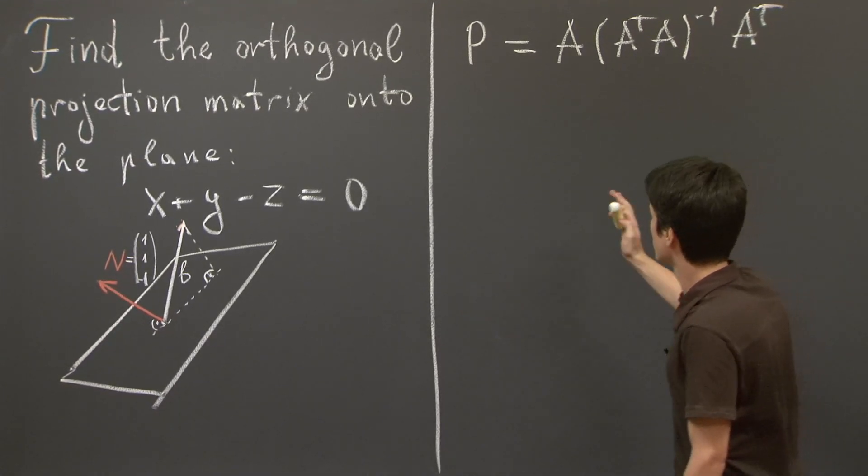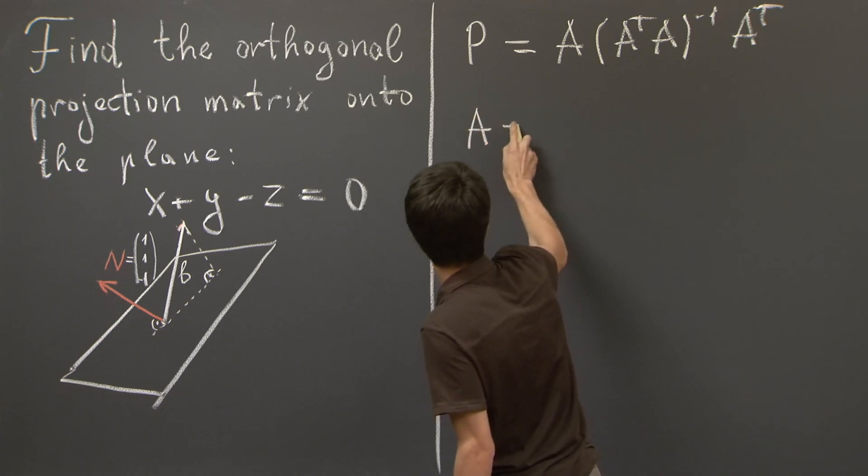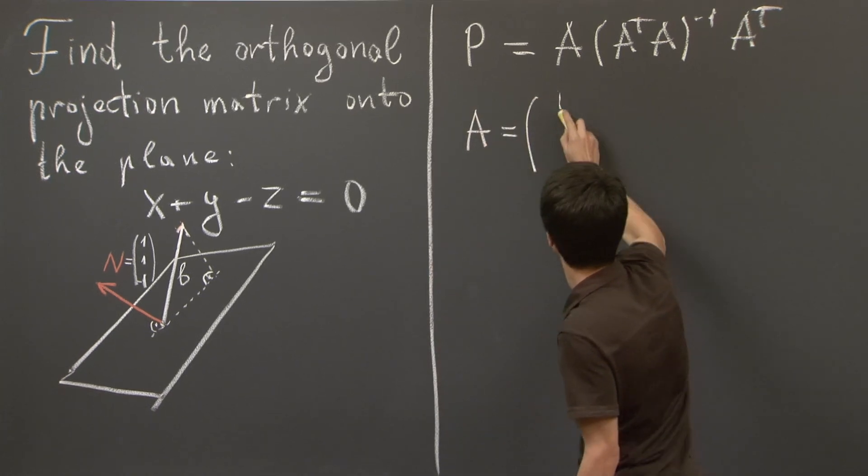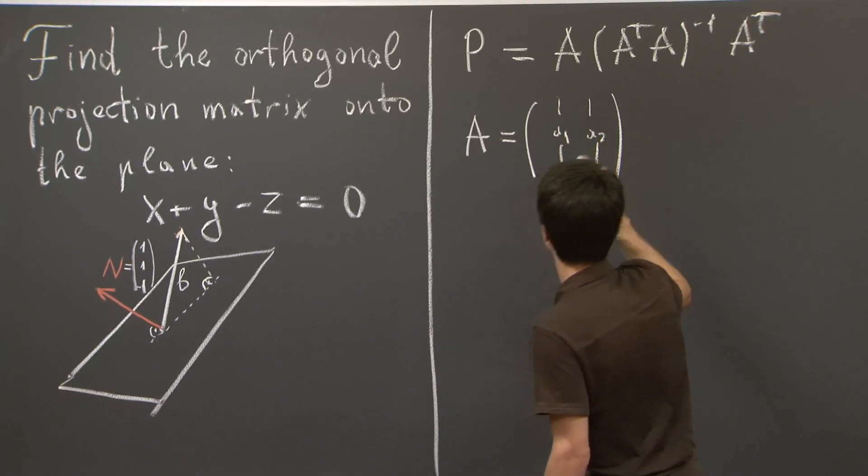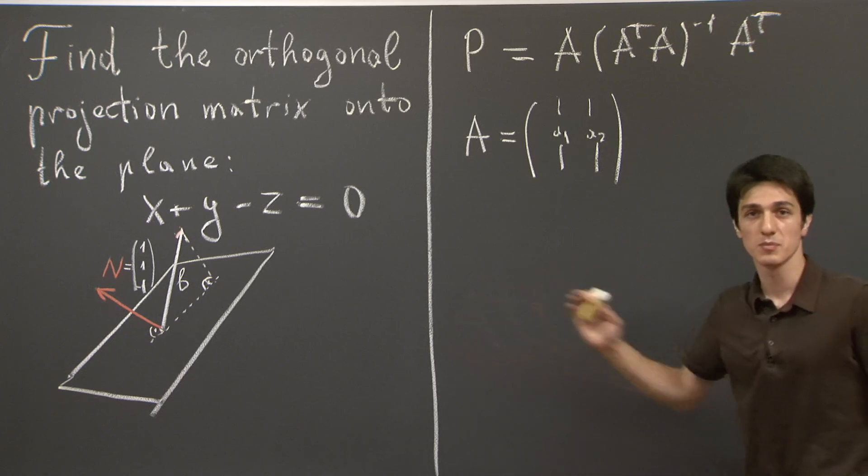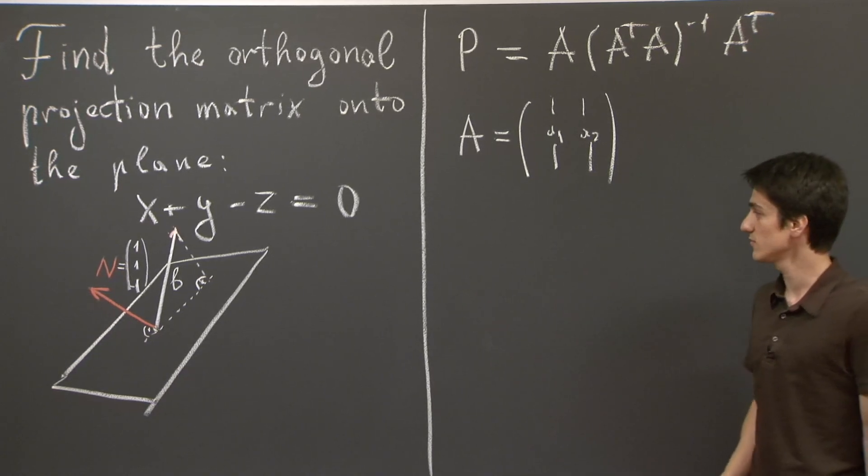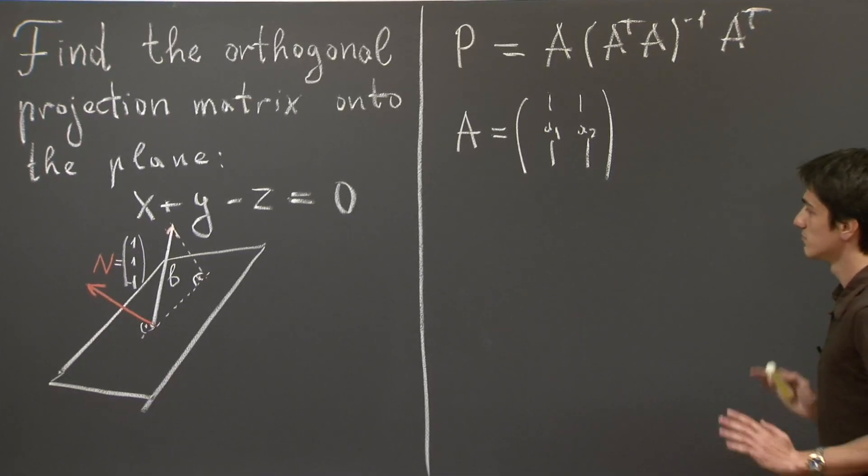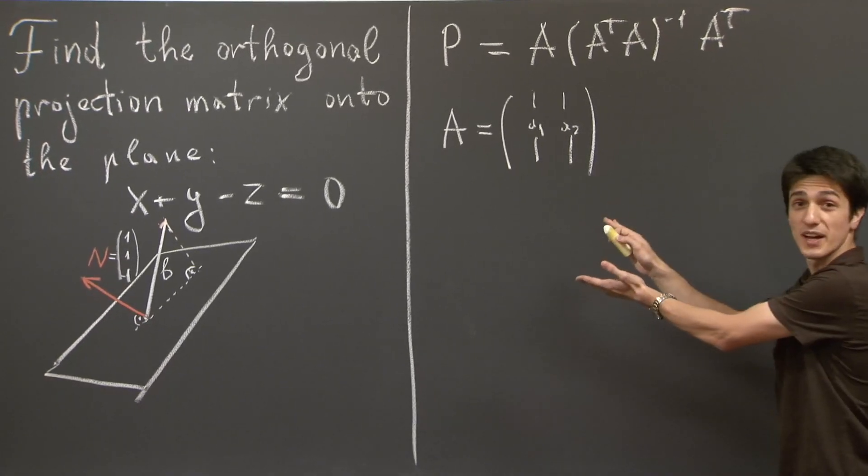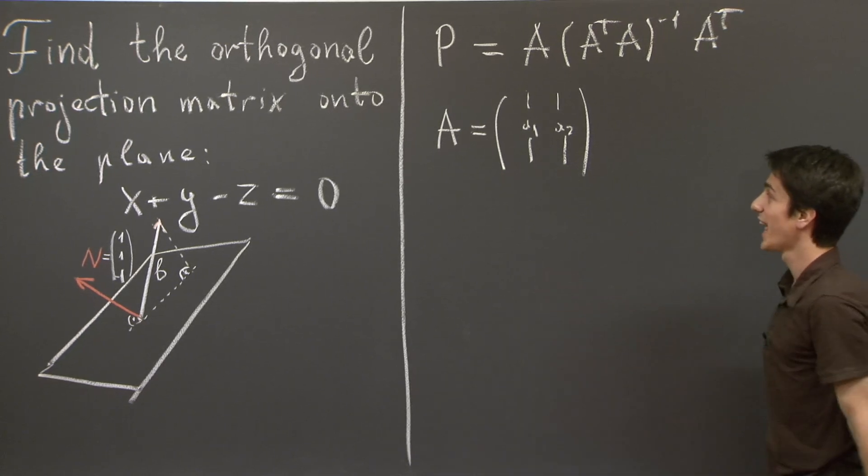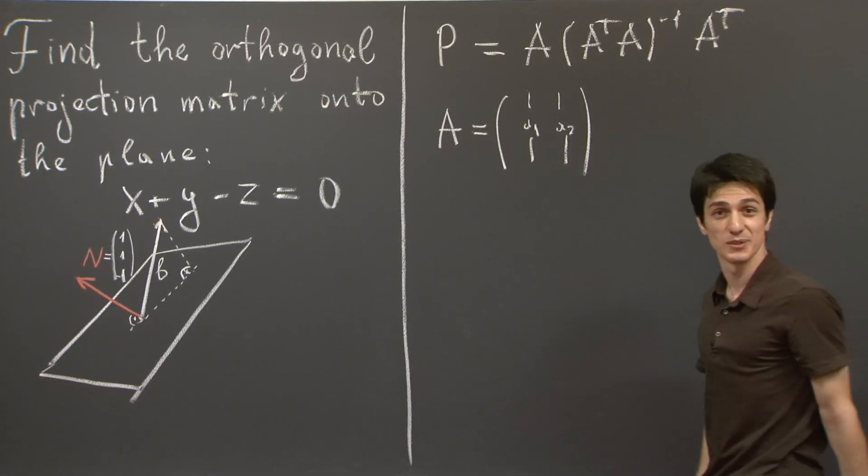In particular, A has as its columns, A1, A2, I'm going to denote them, a basis for the plane we're projecting on. So essentially what we need to do is find two such vectors that span the plane and start computing with the matrix.